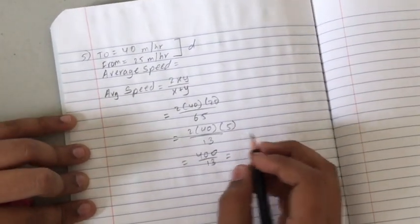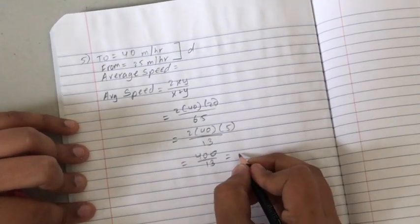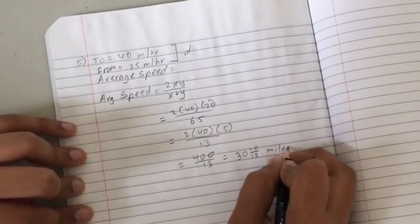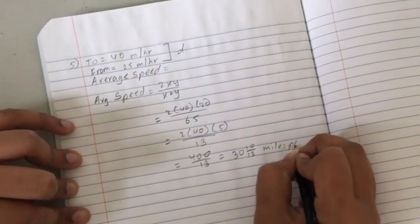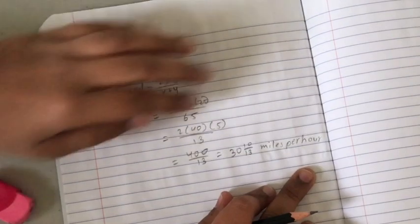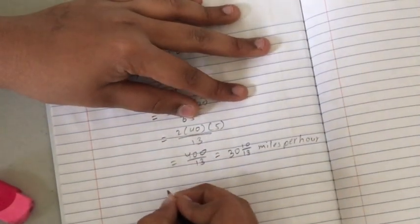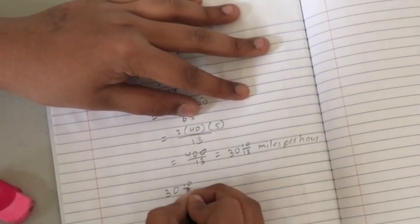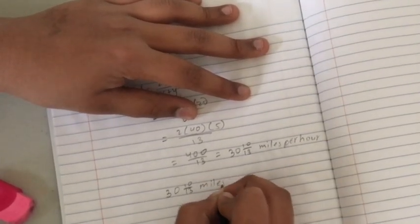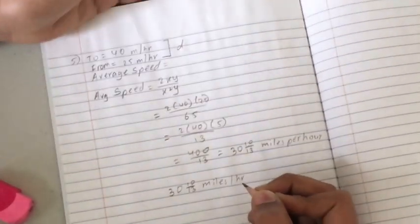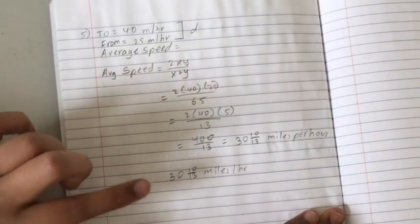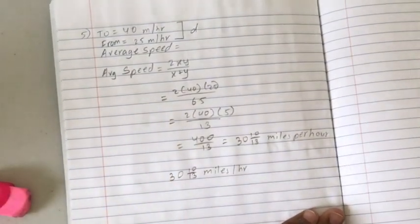And we get the average miles per hour to be 30 and 10 by 13 miles per hour. So, the answer is 30 and 10 by 13 miles per hour.